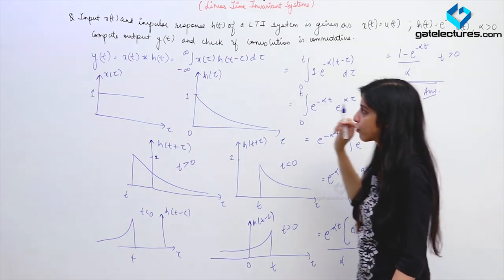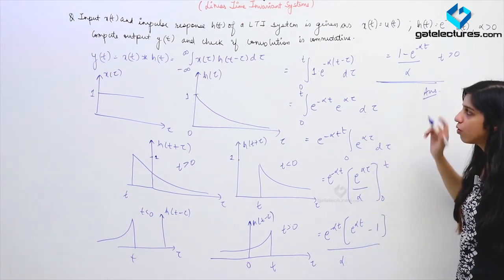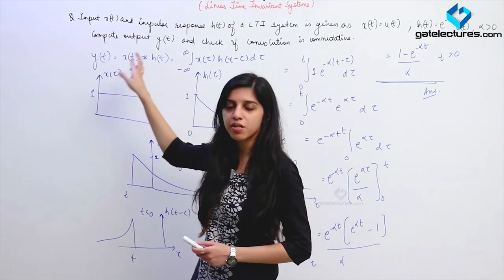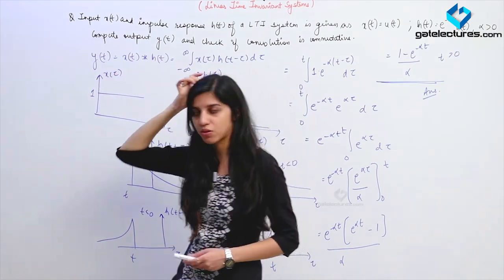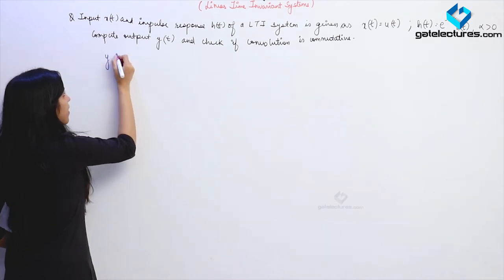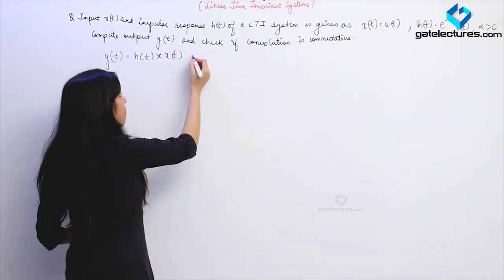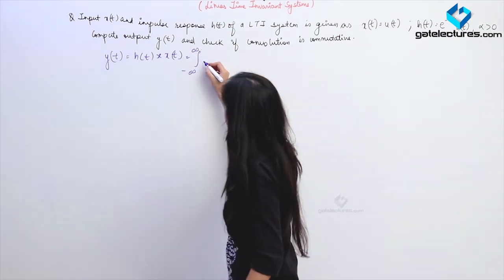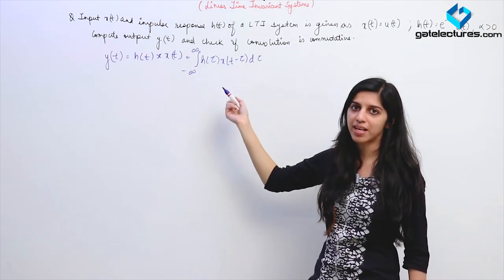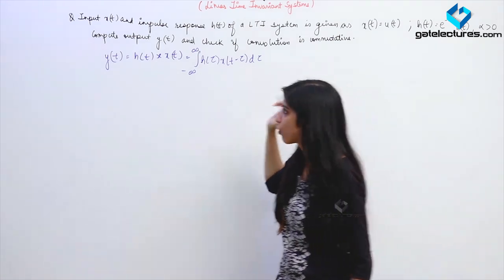Now to check commutativity of this convolution, I reverse the order: Y(T) = H(T)*X(T) = ∫from −∞ to ∞ H(τ)X(T−τ)dτ. I sketch H(τ) — starts at value 1 at τ=0 and decays to 0 as τ→∞ — and then sketch X(τ) as a simple unit step signal, and perform the required shifting and reversal on X(τ) to get X(T−τ).